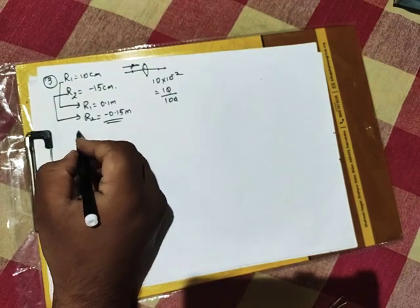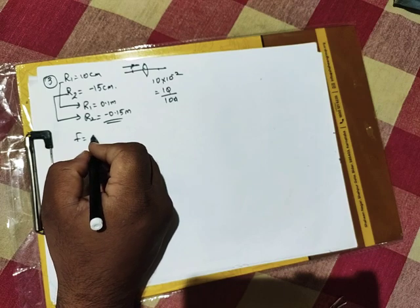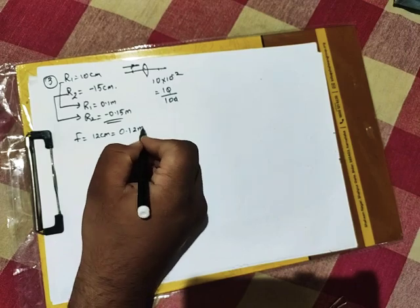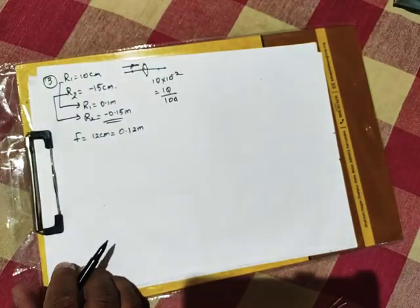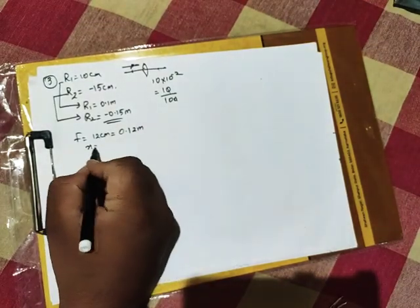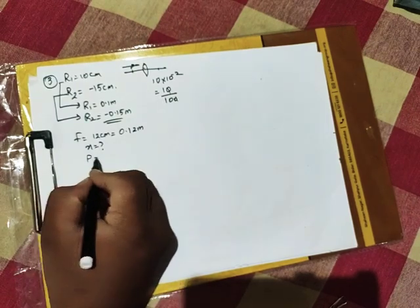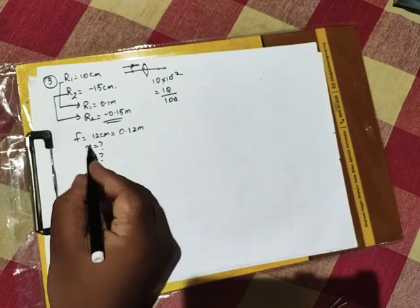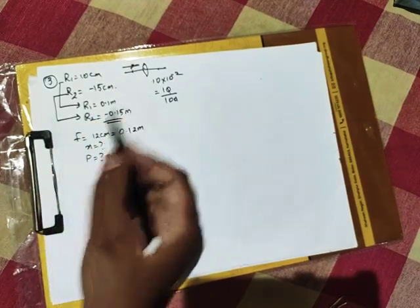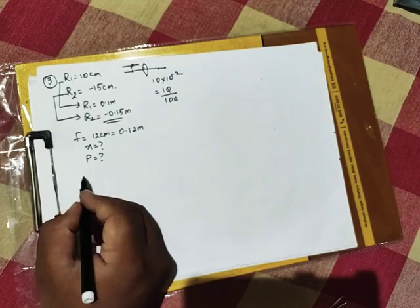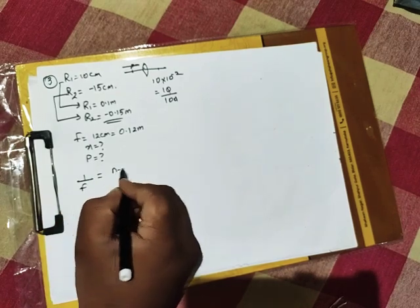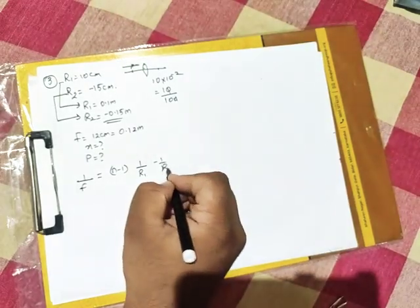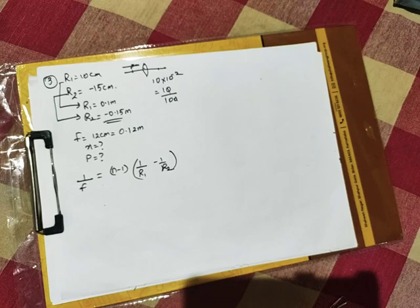Then, he has also told focal length. Focal length of it is given as 12 centimeter, that is 0.12 meter. Calculate the refractive index and power. Really simple question. Required formula here is, it is a double convex lens. Lens makers formula: 1 by f equals n minus 1, 1 by r1 minus 1 by r2.